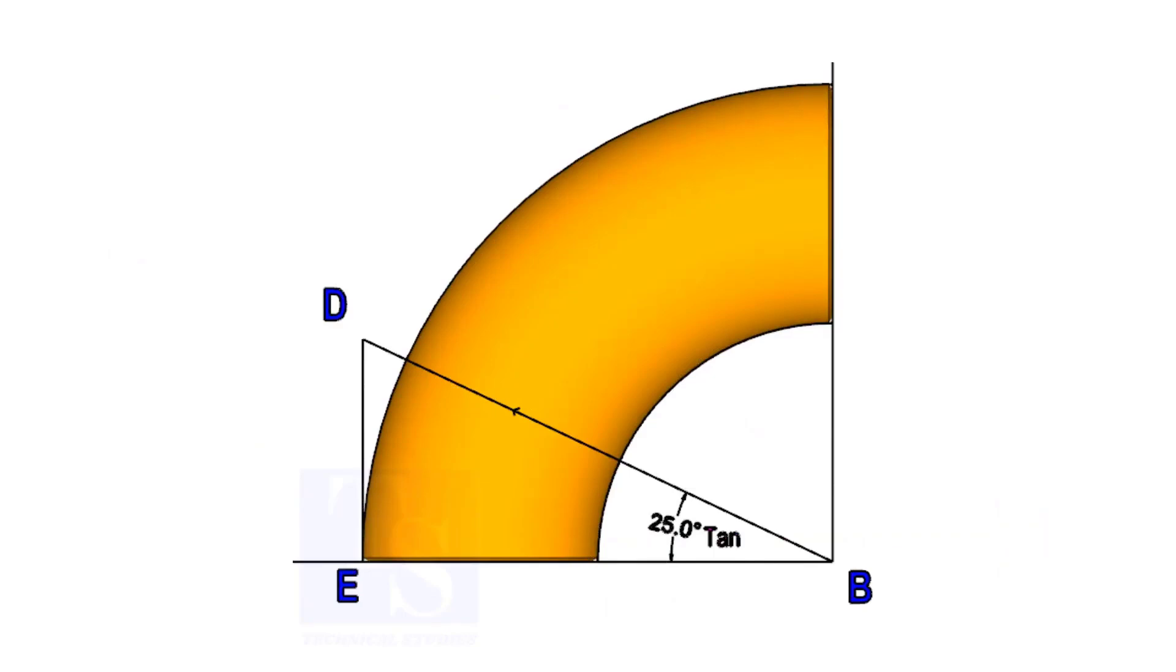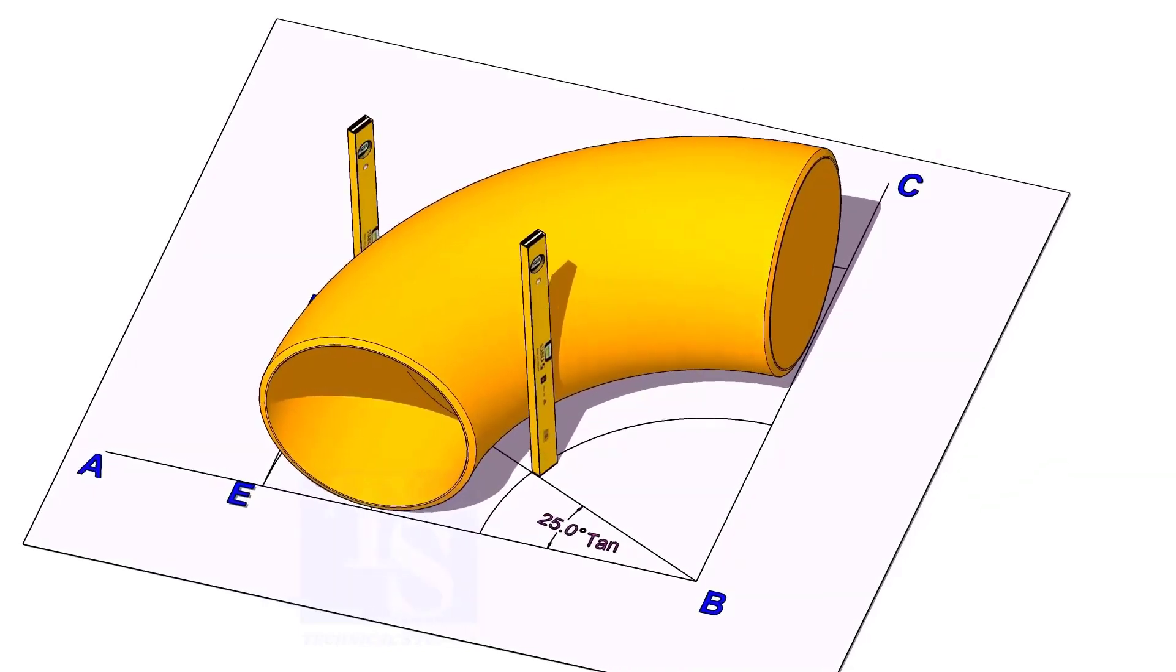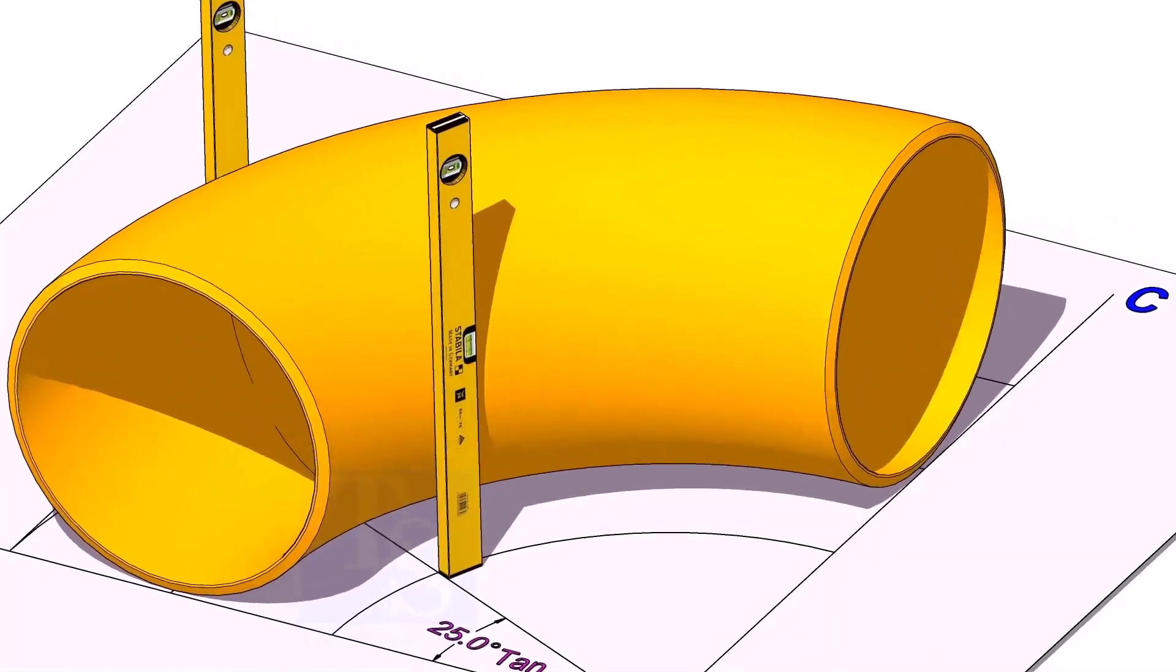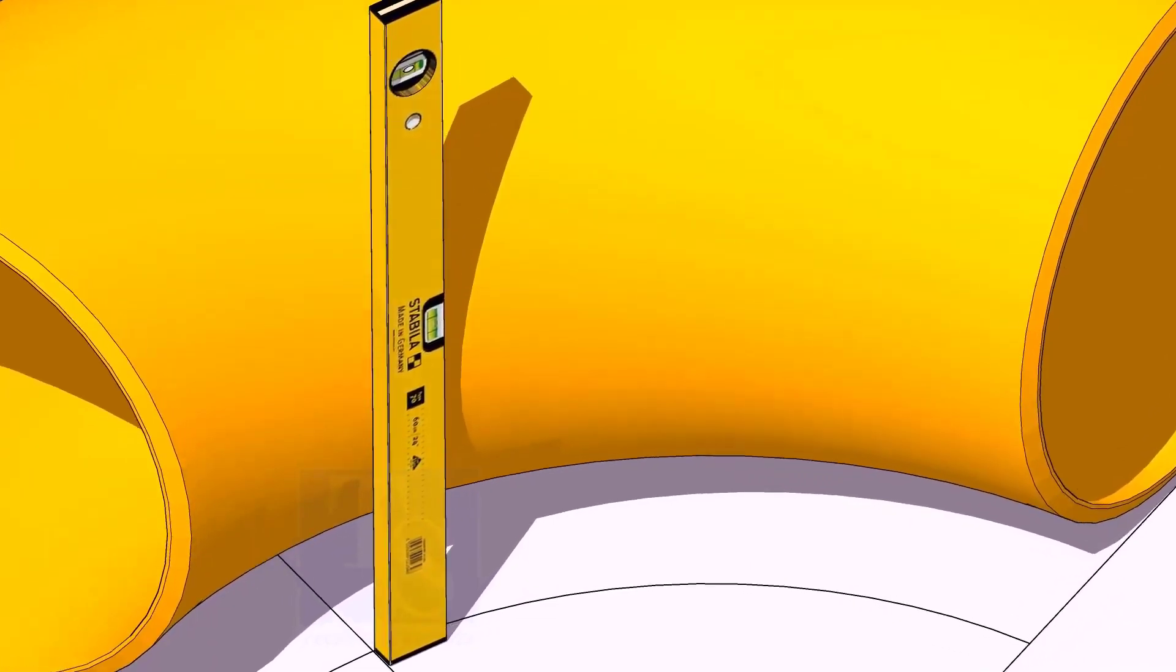Now, put the elbow exactly on the layout as shown. Hold two large level bottles at the edge of the elbow on both sides vertically, and strike a mark where the level bottle edge touches the elbow.